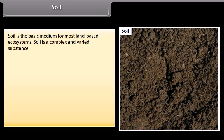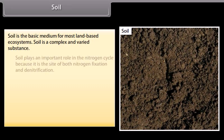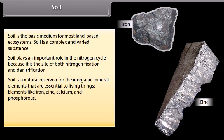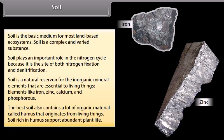Soil is the basic medium for most land-based ecosystems. Soil plays an important role in the nitrogen cycle because it is the site of both nitrogen fixation and denitrification. Soil is a natural reservoir for inorganic mineral elements essential to living things, such as iron, zinc, calcium, and phosphorus. The best soil also contains a lot of organic material called humus that originates from living things. Soil rich in humus supports abundant plant life.